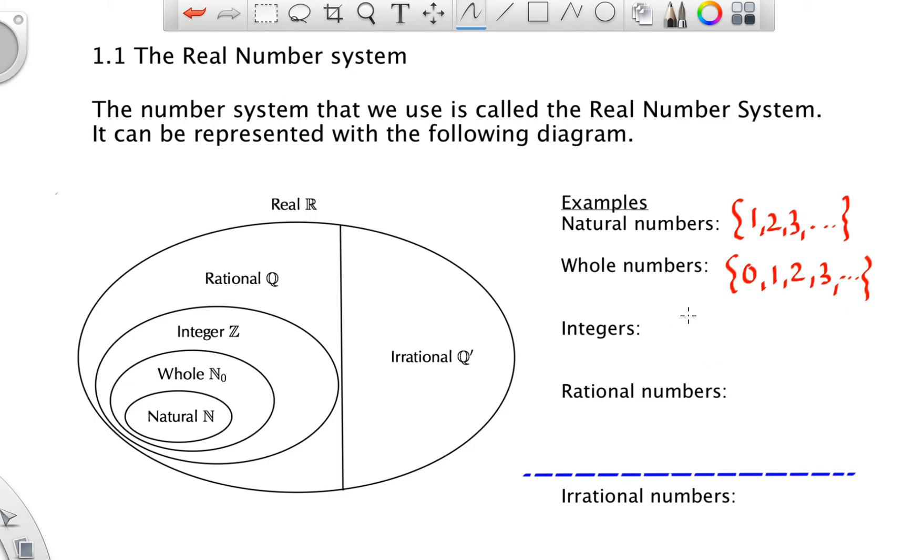And then the integers are both all of the positives, zero and the opposites. So the integers include our negative numbers as well.